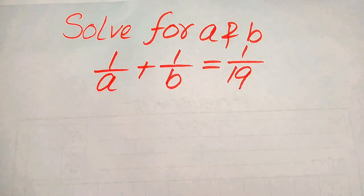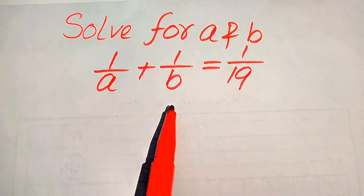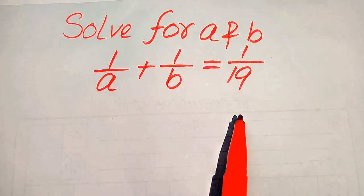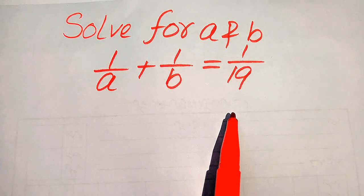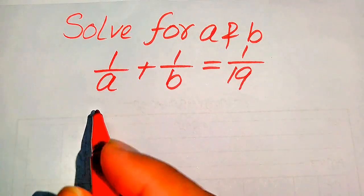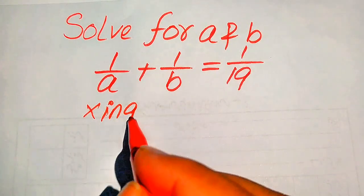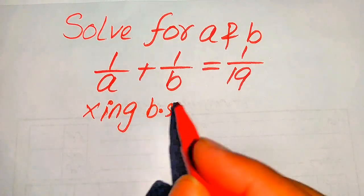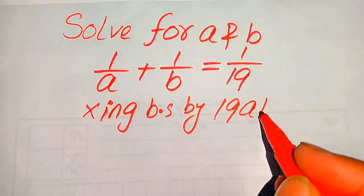Hello everyone. How to solve this problem for the values of a and b if we have 1 over a plus 1 over b equals 1 over 19. First, we need to remove these fractions from both sides. In order to remove these fractions, we need to multiply both sides by 19 times ab.